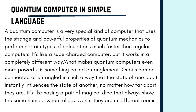What makes quantum computers even more powerful is something called entanglement. Qubits can be connected or entangled in such a way that the state of one qubit instantly influences the state of another, no matter how far apart they are. It's like having a pair of magical dice that always show the same number when rolled, even if they are in different rooms or even different countries.